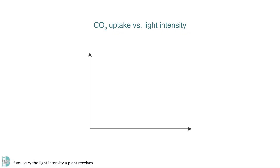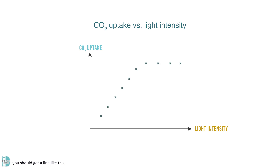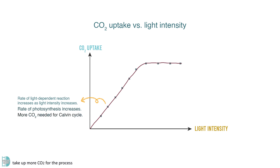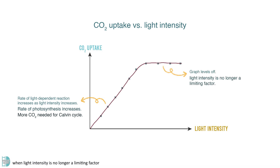If you vary the light intensity a plant receives and check the carbon dioxide uptake of the plant, you should get a line like this. In the beginning, the rates of light-dependent reaction increases when light intensity increases. This results in an overall increase in the rates of photosynthesis. Hence, the plant needs to take up more carbon dioxide for the process. The graph reaches a plateau eventually when light intensity is no longer a limiting factor.